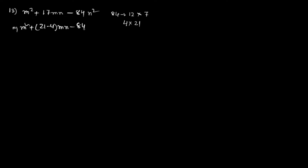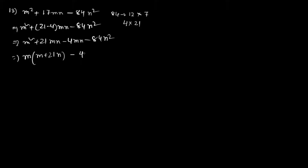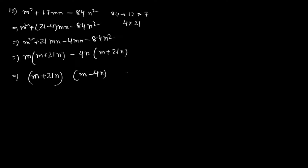From M² + 21MN - 4MN - 84N², we can take M common to get M(M + 21N), and from the remaining terms take 4N common to get 4N(M + 21N). We can then take (M + 21N) common, leaving (M - 4N). So the answer is (M + 21N)(M - 4N).